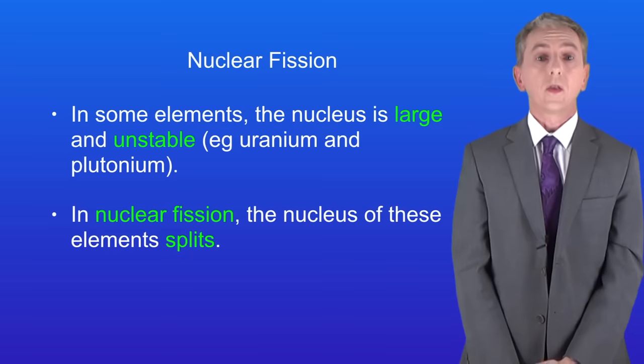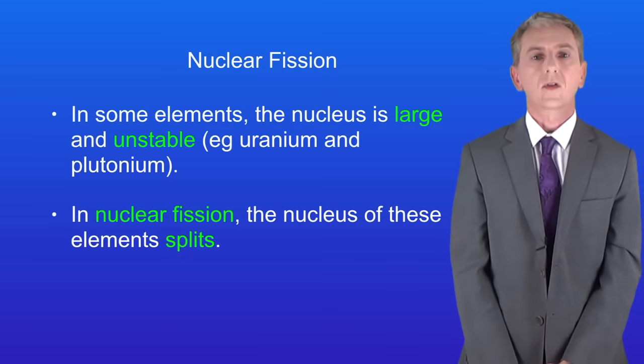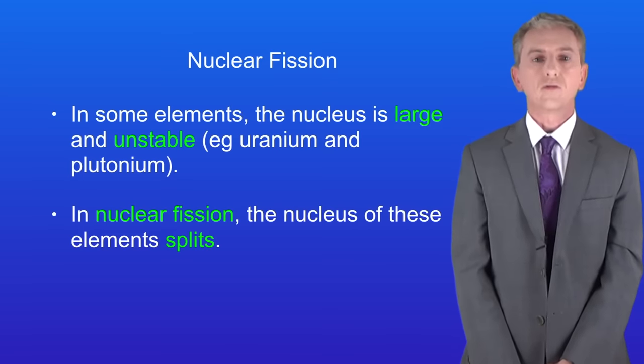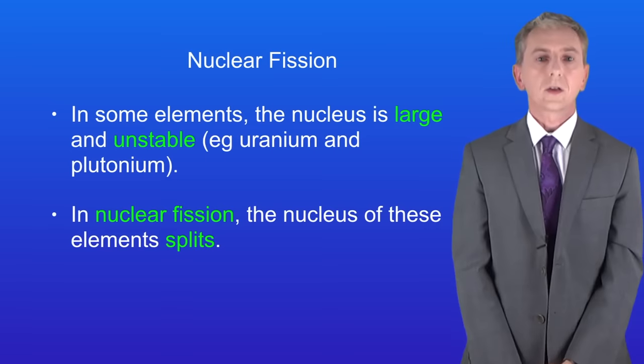In nuclear fission the nucleus of these elements splits. Now this can happen spontaneously, in other words by itself, but that's quite rare. Normally for fission to take place the nucleus first has to absorb a neutron.